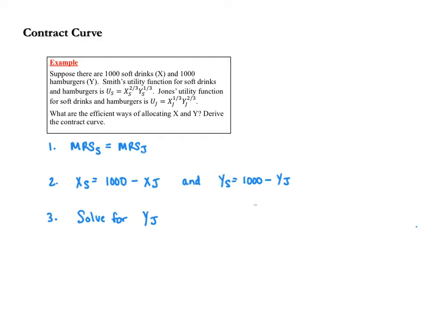The question asks: what are the efficient ways of allocating X and Y to derive the contract curve?